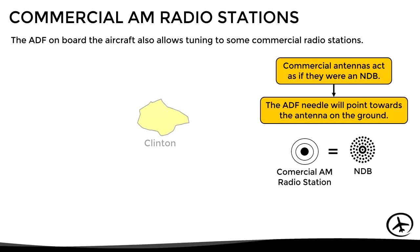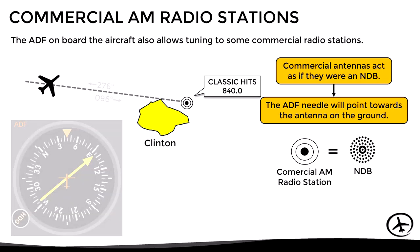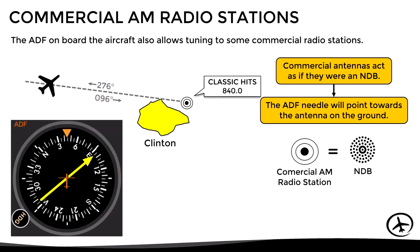For example, let's say that nearby the town of Clinton there is a commercial radio station called Classic Hits. In this case, if the pilot tunes its frequency in the ADF, the needle will point towards the transmitting antenna on the ground, allowing the aircraft to determine its position in relation to Clinton and use it as a reference for navigation, just like an NDB.